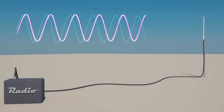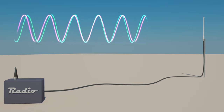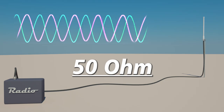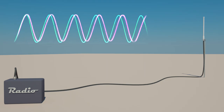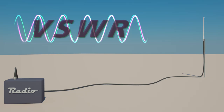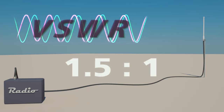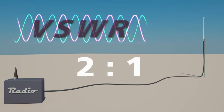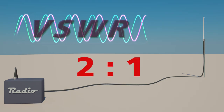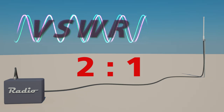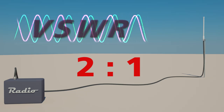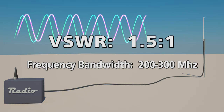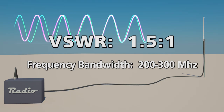Most modern antennas, receivers, and transmitters are designed for peak performance when operating into a 50-ohm transmission line. The typical commercial standard for maximum allowable VSWR across the entire bandwidth of a system is 1.5 to 1. A VSWR of 2 to 1 or greater is usually considered unacceptable since it increases losses in the transmission line, meaning the antenna impedance must be in the range of 50 ohms. You should specify the maximum VSWR and the operating frequency bandwidth when specifying your antenna.